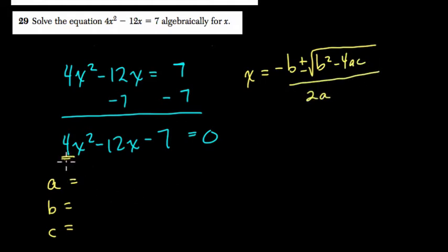So here, what are a, b, and c? Well, a is the coefficient of x squared. b is the coefficient of x. It's negative 12. And c is the constant all by itself, negative 7.